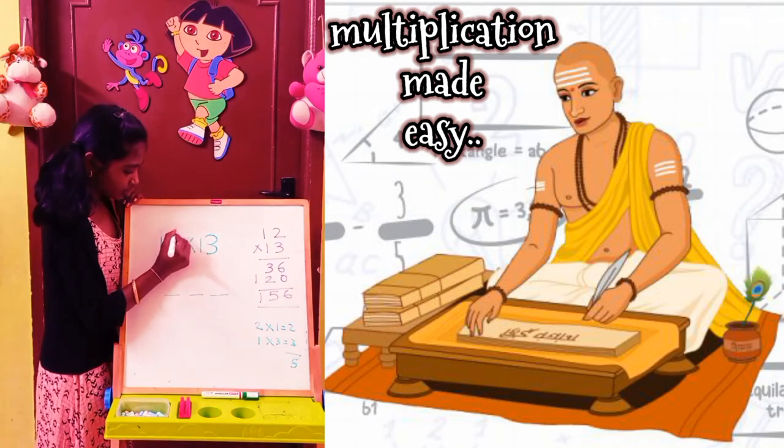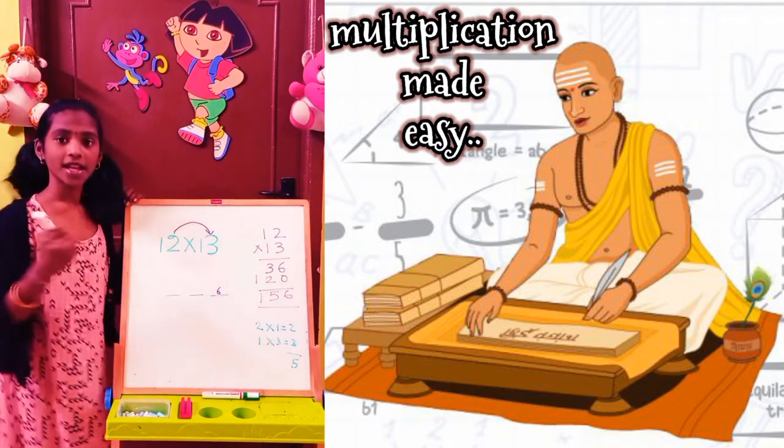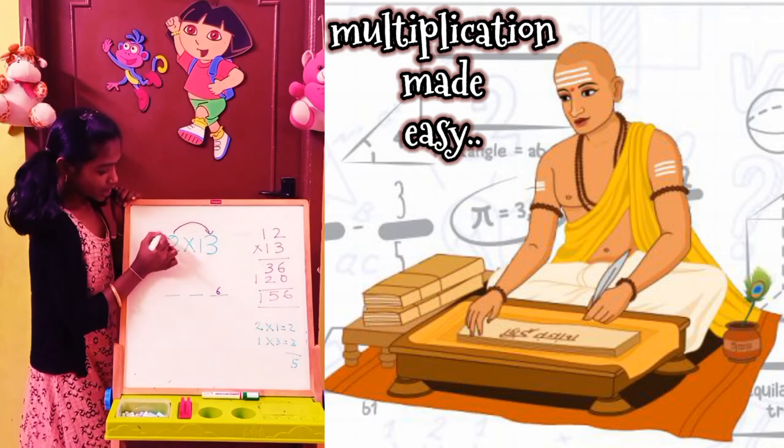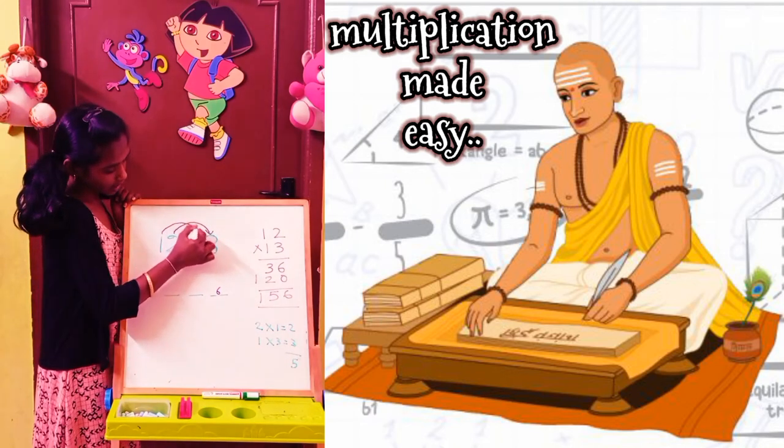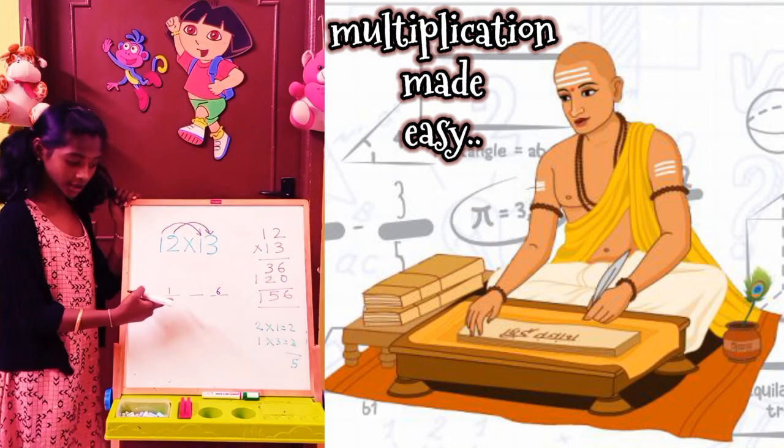We need to multiply 2 by 3 that gives 6. Second step. We need to multiply 1 into 1 that gives 1. Now to find the middle digit,